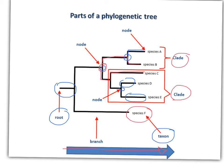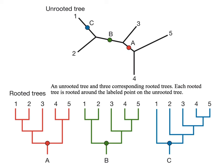Unrooted trees do not indicate direction of time. Each rooted tree is derived from the labeled point on the unrooted tree above.